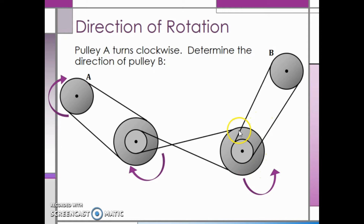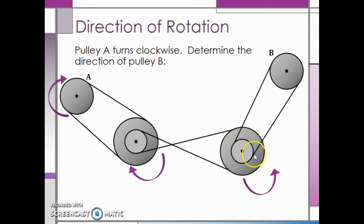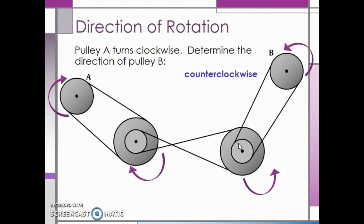It is also on the same shaft as a smaller pulley, so the smaller pulley also rotates counterclockwise. Last, this pulley is connected to pulley B on an open type belt, which means they both rotate in the same direction, therefore pulley B rotates counterclockwise.